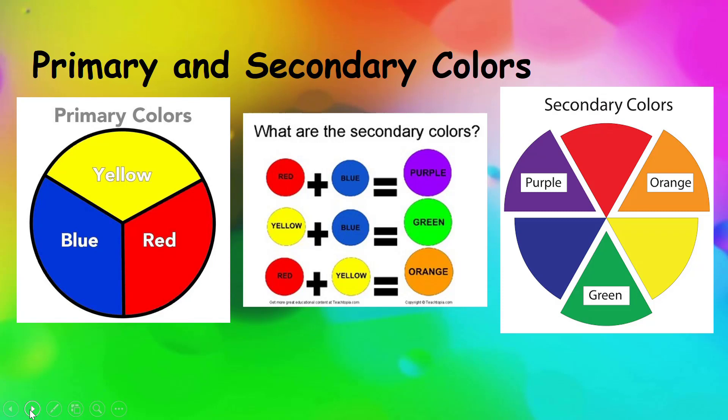That is why the color wheel is always in the same order: red, orange, yellow, green, blue, and purple.